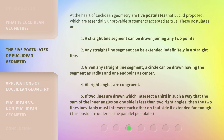At the heart of Euclidean geometry are five postulates that Euclid proposed, which are essentially unprovable statements accepted as true. These postulates are: 1. A straight-line segment can be drawn joining any two points. 2. Any straight-line segment can be extended indefinitely in a straight line. 3. Given any straight-line segment, a circle can be drawn having the segment as radius and one end-point as center. 4. All right angles are congruent.